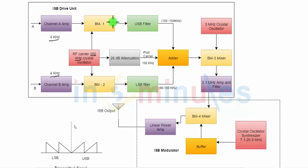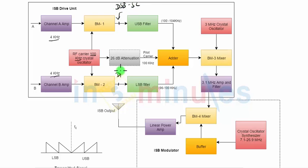The carrier signal is given to the balanced modulators along with the information signals. The output of the first balanced modulator will be double sideband suppressed carrier, and so will the output of the second balanced modulator. However, the information carried will be different in both cases — the first DSBSC signal carries the information of channel A, and the second carries the information of channel B.